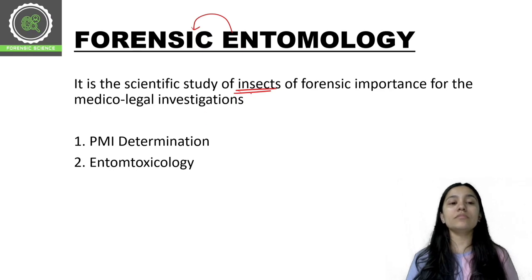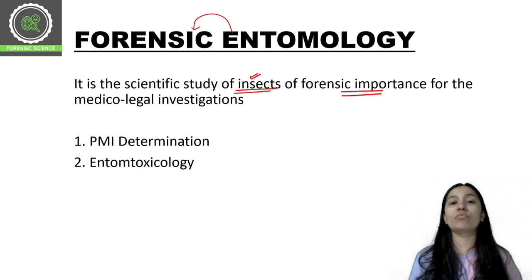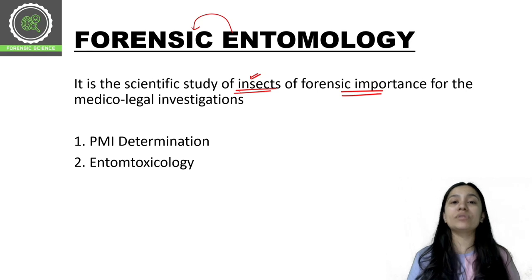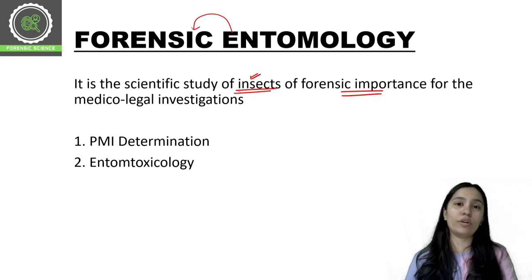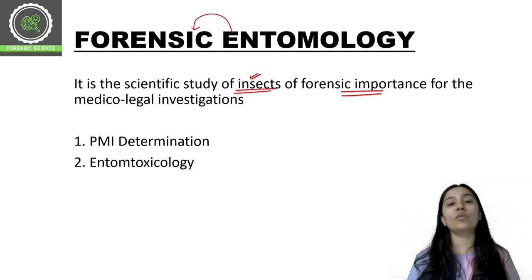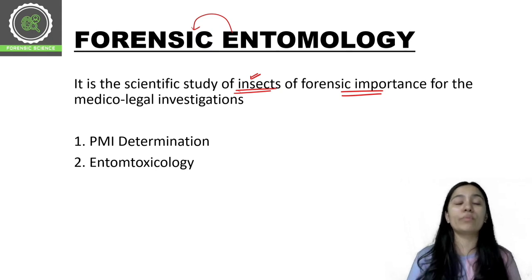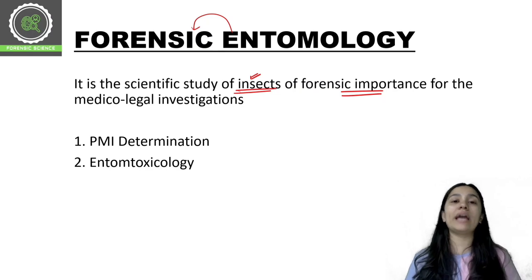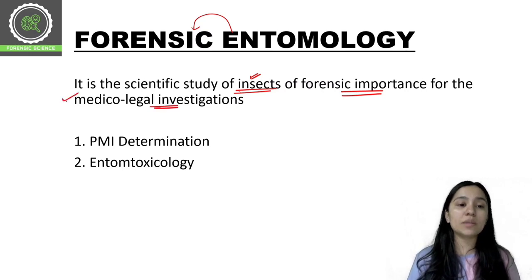Forensic entomology is the scientific study of insects of forensic importance. We study only the insects which are forensically important. Some insects come to feed on decomposing and dead bodies, and because of that we can identify the time since death. Those specific insects which come to the dead body or decomposing body are forensically important — we focus on them only.